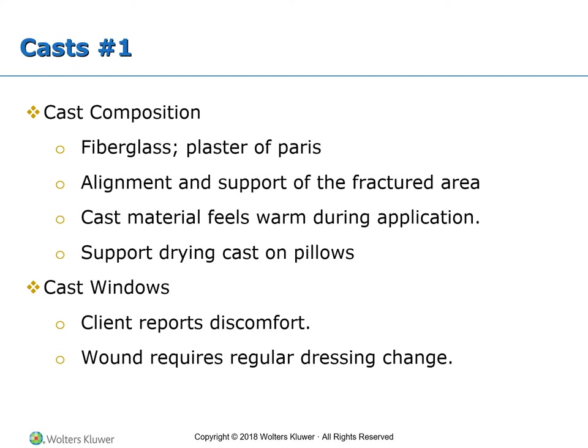Non-plaster or synthetic casts are usually made of polyurethane material, generally known as fiberglass. Water activates the hardeners that impregnate the open weave fabric to form a rigid cast within minutes. Depending on the degree of swelling at the site of the fracture, this type of cast may be used initially, or a plaster of Paris cast may be used until the swelling subsides and then a fiberglass cast may be applied. Plaster casts require a longer time for drying but mold better to the client and are initially used until the swelling subsides.